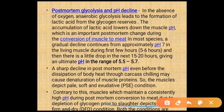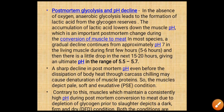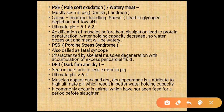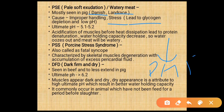PSE (pale, soft, and exudative) meat is mostly seen in pigs of Danish Landrace breed. It is caused by improper handling and stress, leading to glycogen depletion which lowers pH to a range of 5.1 to 5.2. Acidification of muscle before heat dissipation leads to protein denaturation and decreased water holding capacity, causing watery meat. Porcine stress syndrome, also called fatal syncope, is characterized by skeletal muscle degeneration with accumulation of excessive pericardial fluid.